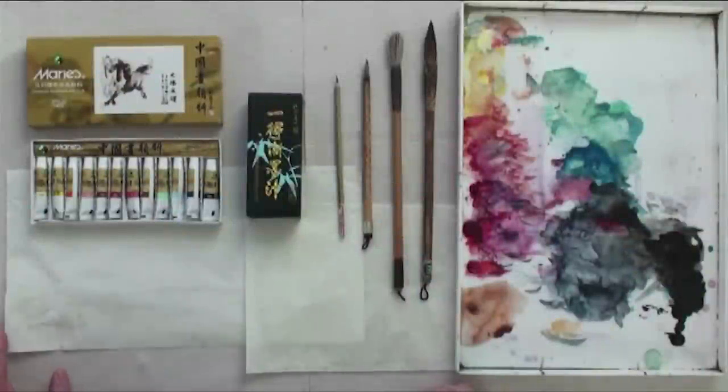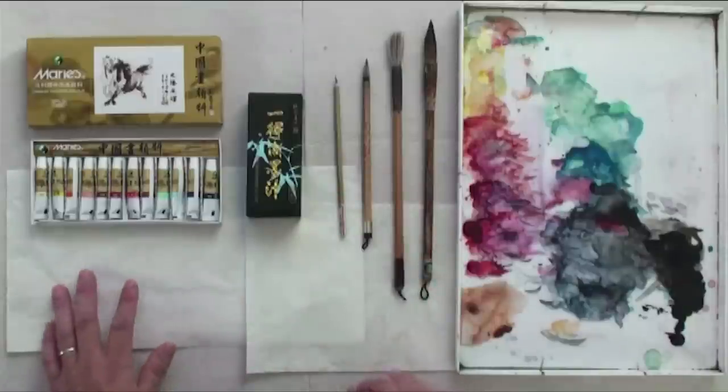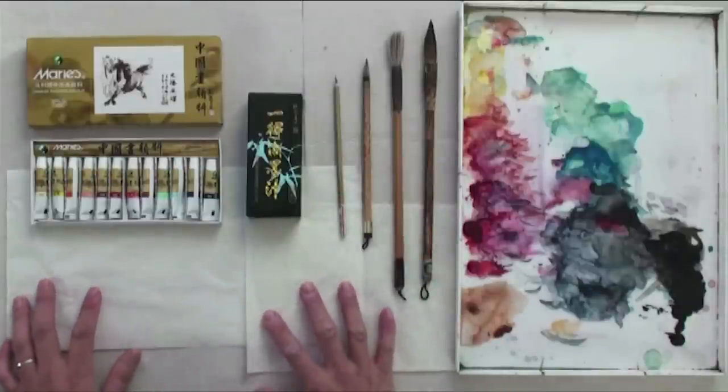To paint Chinese painting, you need four basic materials: Chinese painting color, Chinese calligraphy and painting ink, Chinese painting brushes, and rice paper, or we call it xuan paper.